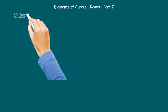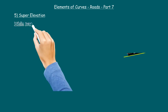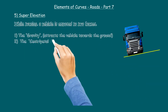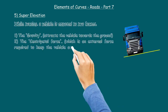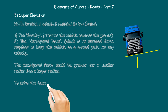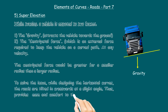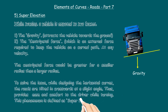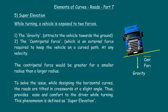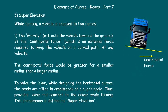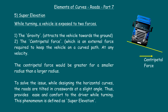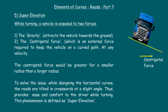Regarding super elevation: while turning, a vehicle is exposed to two forces. One is gravity, which attracts the vehicle towards the ground. Two is the centripetal force, which is an external force required to keep the vehicle on a curved path at any velocity. The centripetal force is greater for a smaller radius than a larger radius.